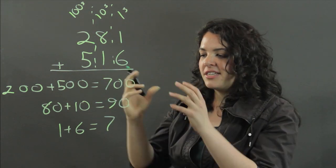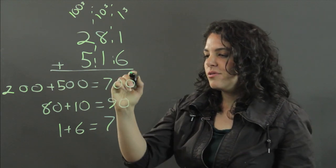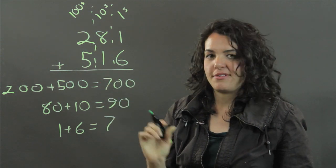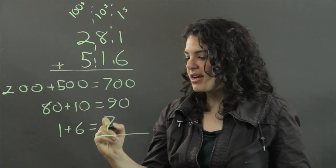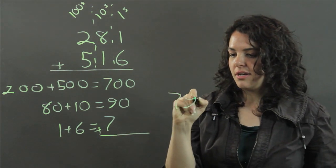it actually adds it for you, usually. If you add, you can just say 797. That's what you get when you add these, 797.